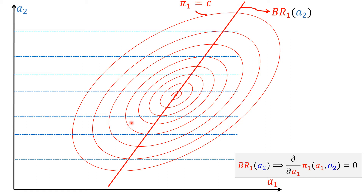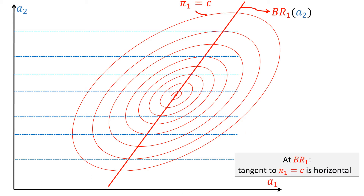And why did we draw tangents everywhere? The justification is mathematical: this is the x-axis which represents Agent 1's action, and since we are maximizing Pi 1 with respect to A1, the derivative del Pi 1 over del A1 must be equal to 0 at the best responses. That's why we are taking all these points where the contour Pi 1 is tangent to the horizontal line — the derivative must be 0. So this is the best response curve of Agent 1 as a function of the action of Agent 2.